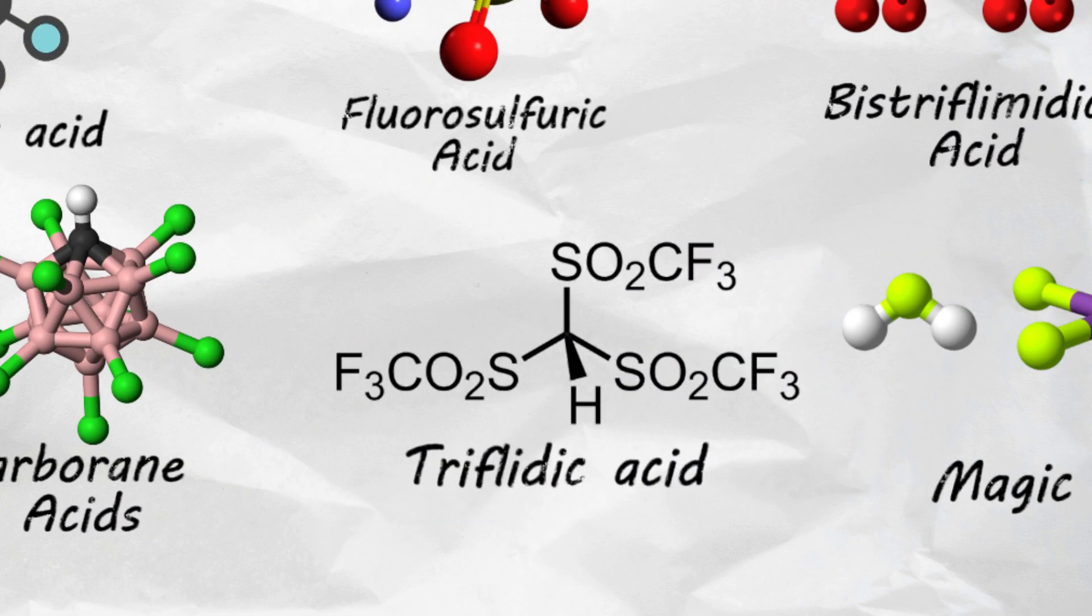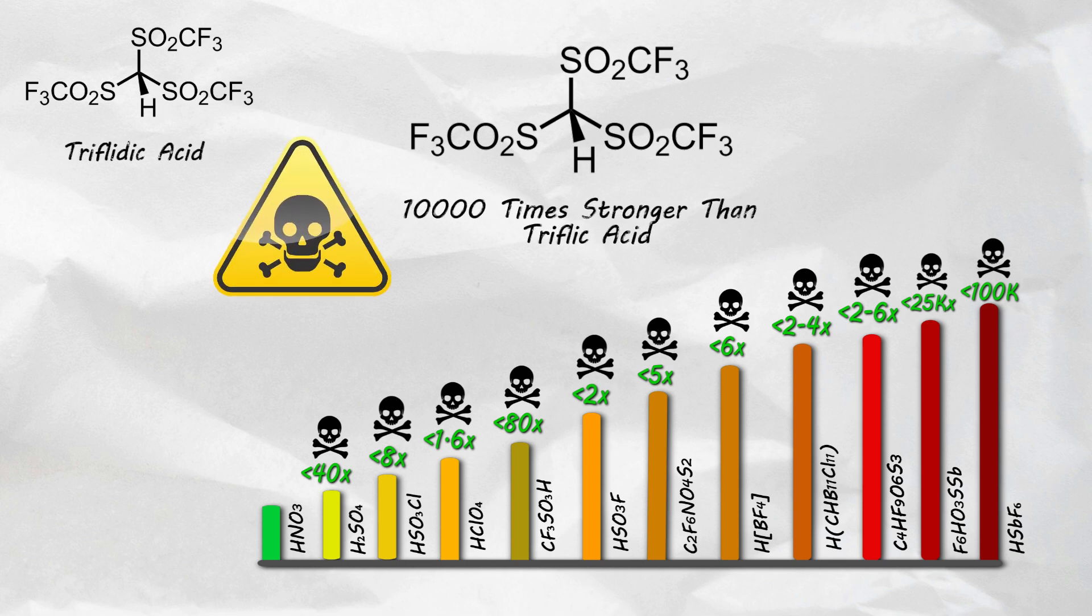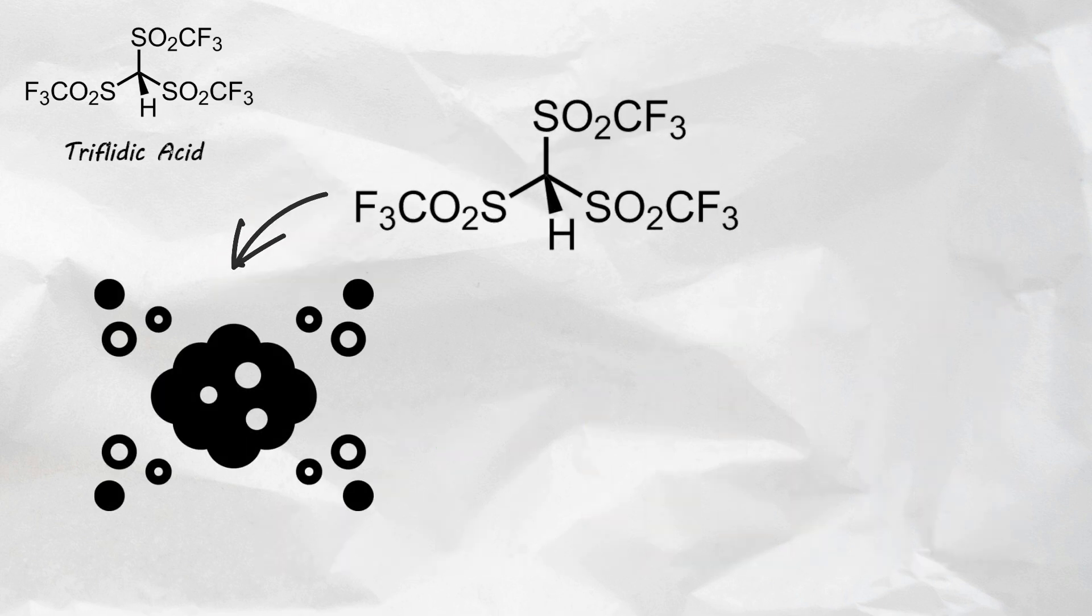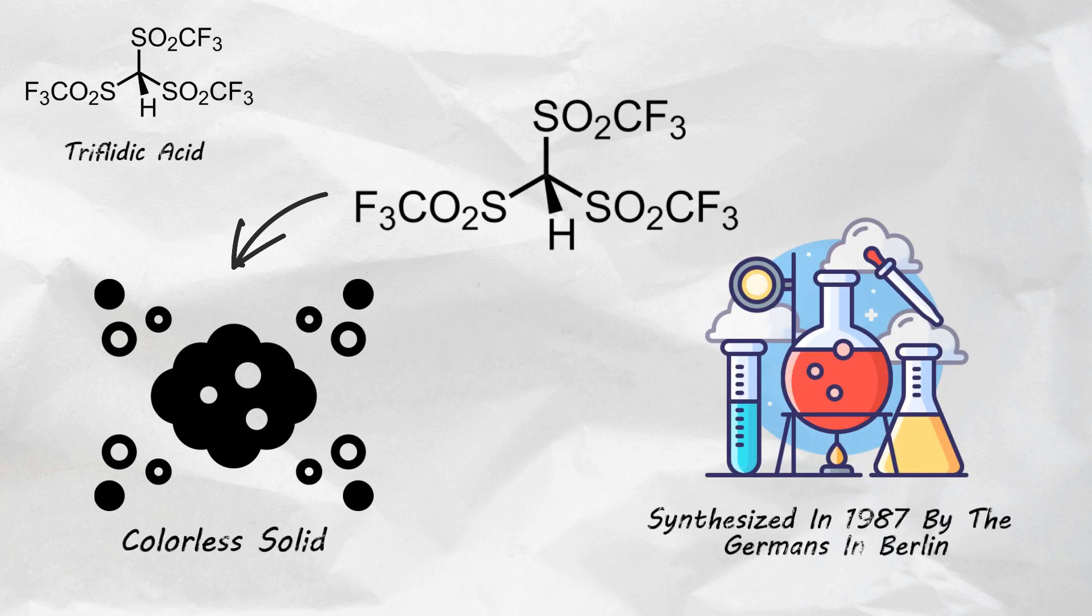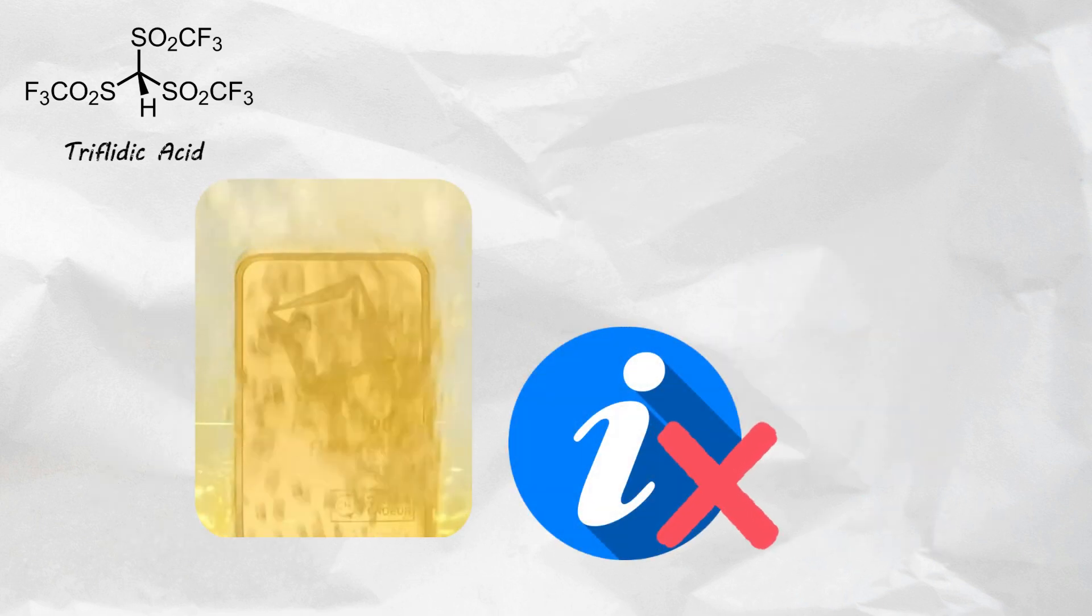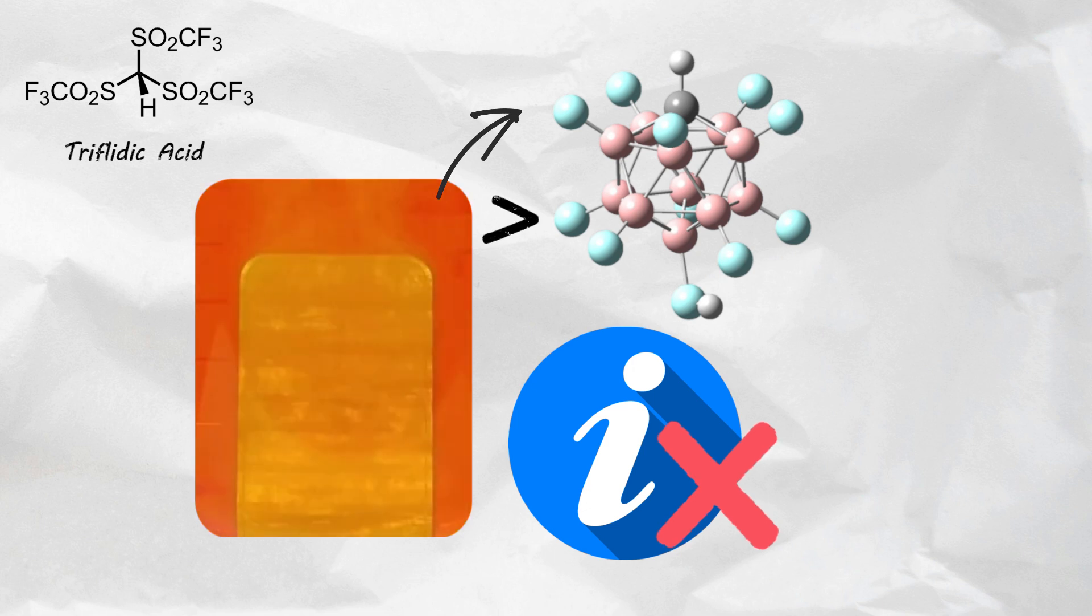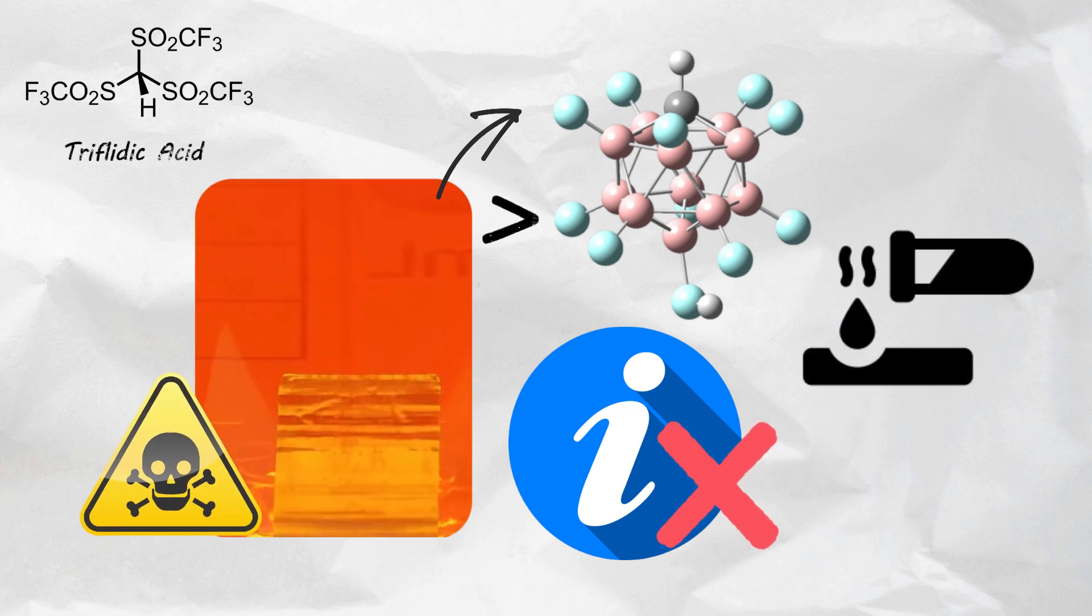Triflitic acid. Approximately two to six times stronger than carborane super acids and 10,000 times stronger than triflic acid. This stuff is terrifying. Triflitic acid is a colorless solid and was initially synthesized in 1987 by the Germans in Berlin. There isn't a lot of information available about this super acid, but in comparison to the carborane acids, it is highly dangerous for humans because of its strong corrosiveness.